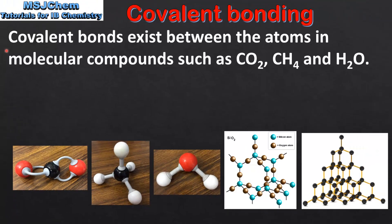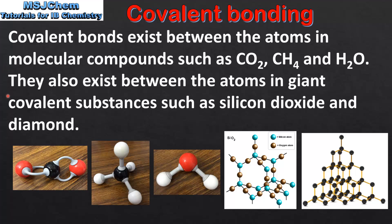Covalent bonds exist between the atoms in molecular compounds such as carbon dioxide, methane and water. They also exist between the atoms in giant covalent substances such as silicon dioxide and diamond. On the left we have the three molecular compounds — carbon dioxide, methane and water — and the bonds between the atoms in these molecules are covalent bonds.